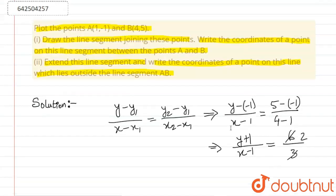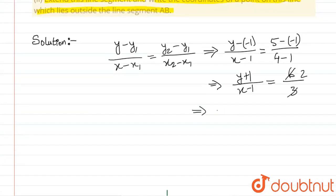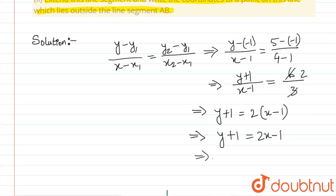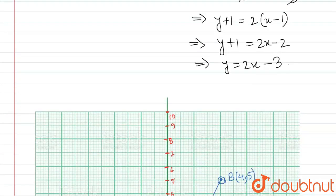Simplifying, we get: y + 1 = 2(x - 1), which expands to y + 1 = 2x - 2. Therefore, y = 2x - 3. This is the equation of line AB.